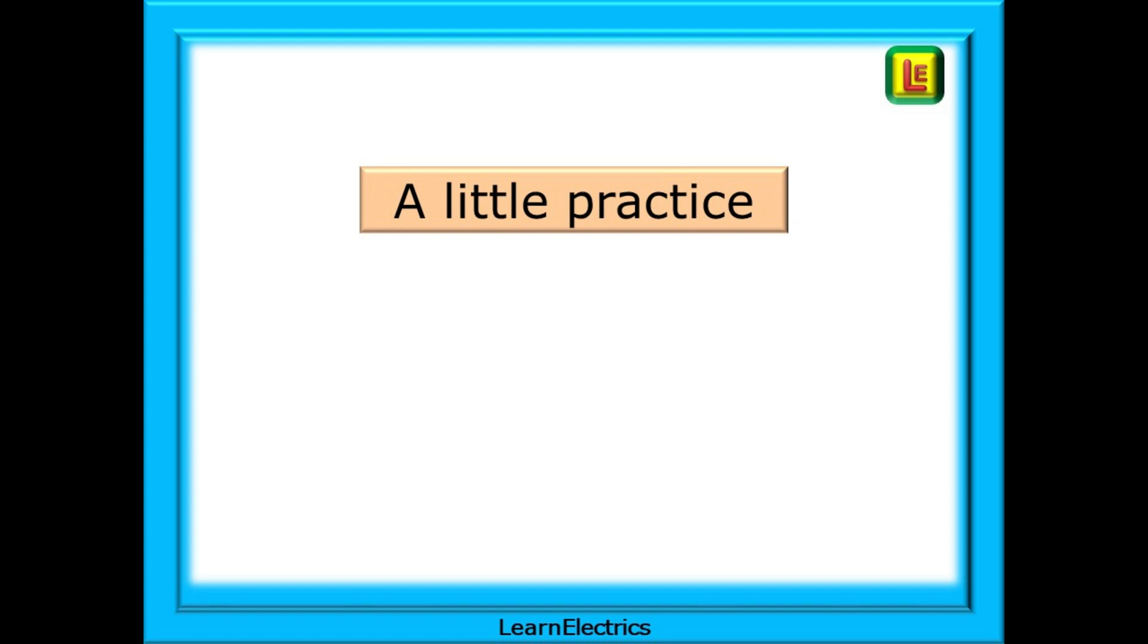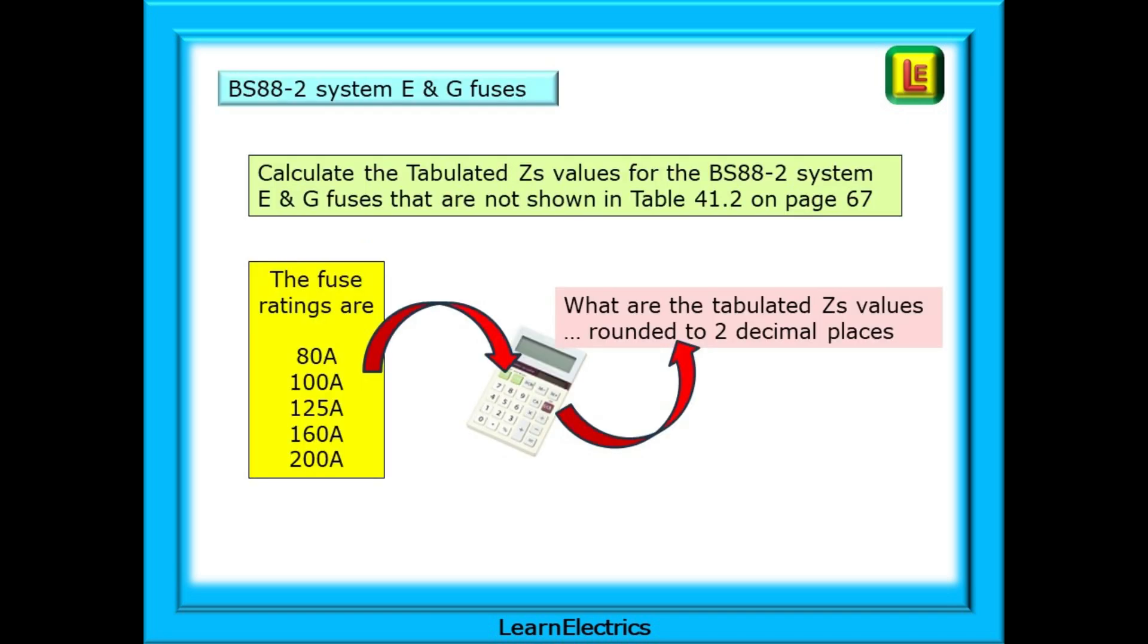And now, time for a little practice yourself. Five very quick and easy calculations for BS88-2 System E and G fuses. Make an attempt at these. The process of attempting them will reinforce your understanding. Calculate the tabulated ZS values for the BS88-2 System E and G fuses that are not shown in Table 41.2 on page 67. The five fuse ratings are as shown in the yellow box. All you must do is to find the required fault current for each rating, and then calculate the tabulated ZS values, rounding up or down to two decimal places.